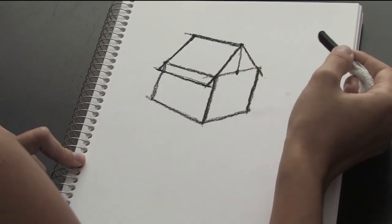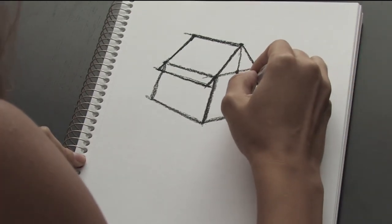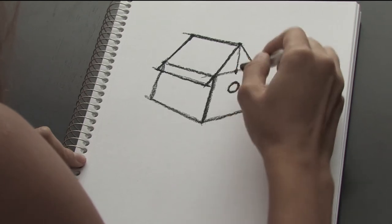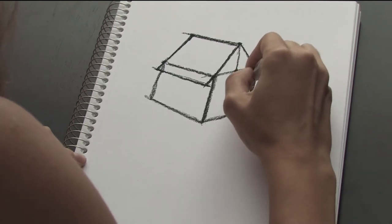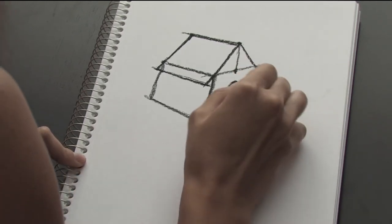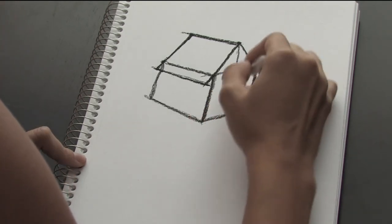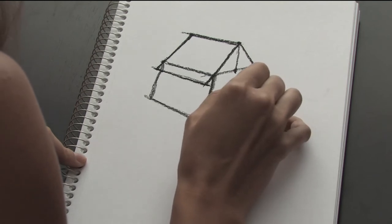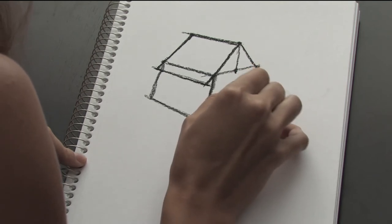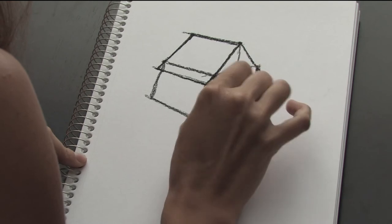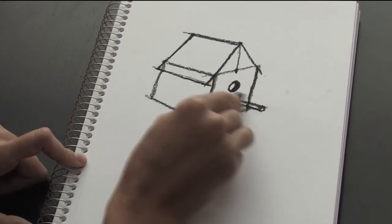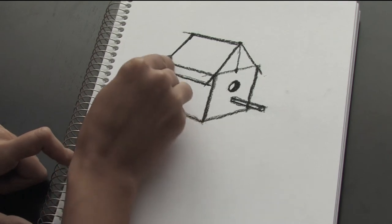And now we need to make some entrance hole for the bird. Just use the oval shapes to make the entrance hole in the birdhouse. And you see these lines have to be parallel to these lines.